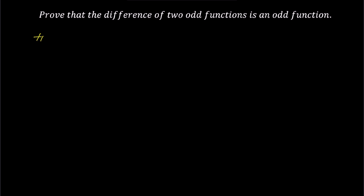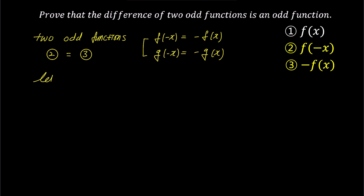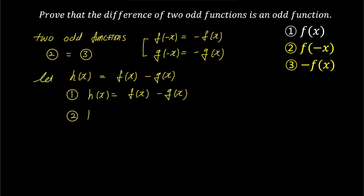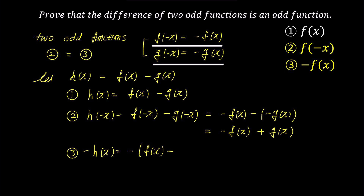This time, let's prove whether the difference of two odd functions becomes an odd function. Using the properties of odd functions, we define f of negative x equals minus f(x) and g of negative x equals minus g(x). Let h(x) equal f(x) minus g(x). For representation 1, h(x) is f(x) minus g(x). For representation 2, h of minus x is f of negative x minus g of negative x, which using the properties of odd functions becomes minus f(x) minus parenthesis minus g(x), simplifying to minus f(x) plus g(x). For representation 3, negative h(x) is minus f(x) minus g(x), which when simplified also becomes minus f(x) plus g(x).